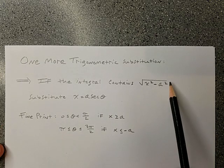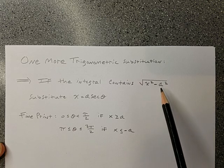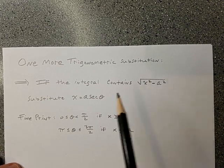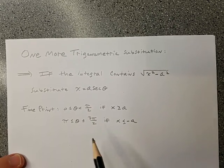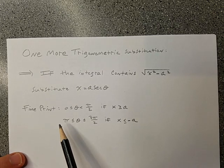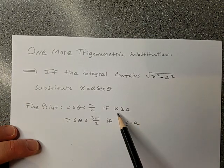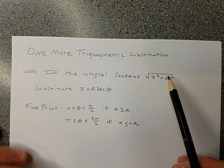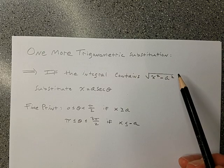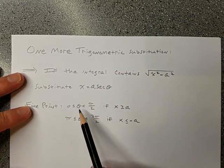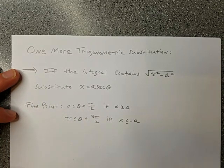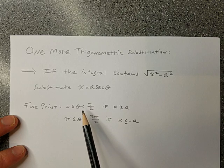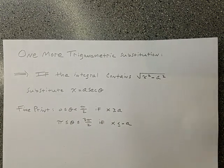For the case that the integral contains a difference of squares like root x squared minus a squared, we'll substitute x as a secant theta. There is some fine print — x being more than a or x being less than negative a will keep the number under the root positive, which we need for the square root. I'll talk about the restrictions on the angles after doing the first problem.